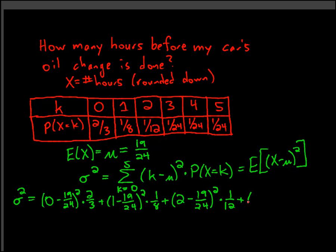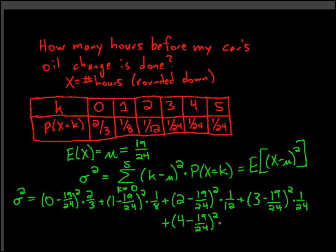Then we put 3 in here — it looks like 4 and 5 are going to need to go on the next line. So: 3 minus 19 over 24, squared, times the probability of getting 3; plus 4 minus 19 over 24, squared, times 1 over 24; plus 5 minus 19 over 24, squared.